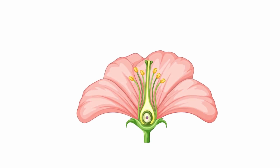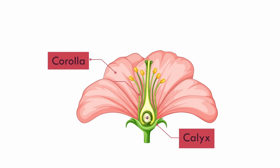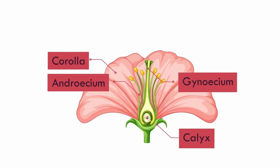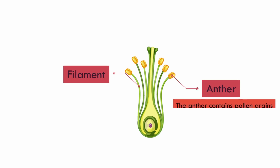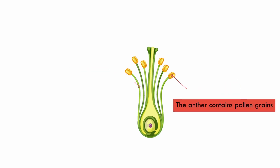A flower consists of four whorls or parts: a calyx, corolla, andricium, and genesium. The andricium contains a bundle of stamens composed of a tube called a filament and a swollen end called the anther. The anther contains pollen grains.